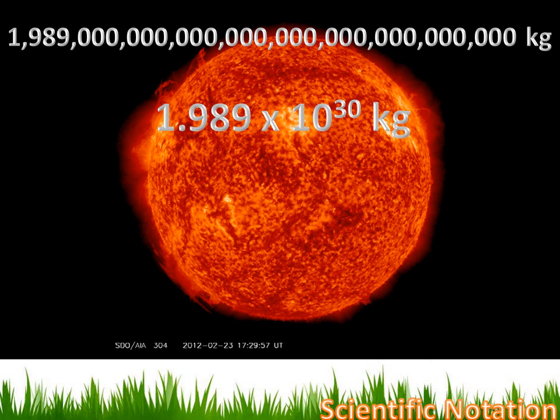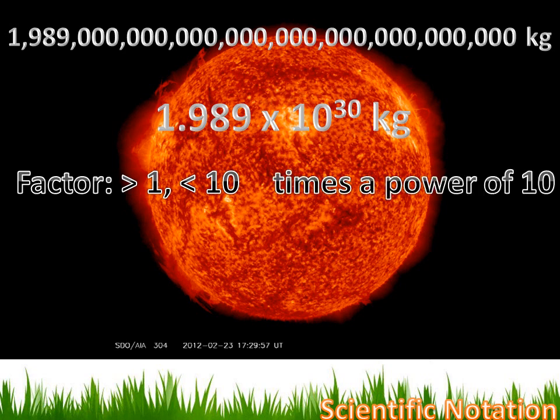Now, there's a couple of things about scientific notation you need to remember. There's two portions to the scientific number. We call that the factor. And the factor is going to be a number between 1 and 10. The factor is going to be greater than 1, but less than 10. You couldn't have a factor of 23. It has to be between 1 and 10. And then you multiply the factor by some power of 10. In this case, 10 to the 30th. Now, if we were to really carry out that multiplication, 1.989 times 10 to the 30th power, we'd come up with that number.